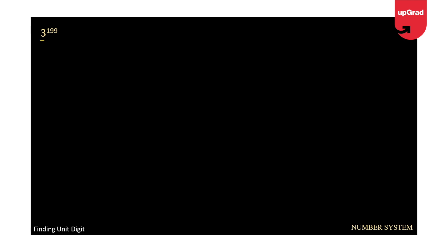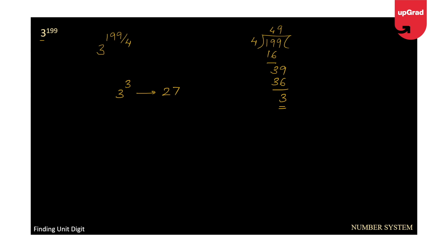Let's take one more example: 3 raised to the power 199. The cyclicity of 3 is 4, so we divide the power by the cyclicity: 199 divided by 4. The remainder is 3, so we compute 3 to the power 3, which is 27. We are looking only for the unit digit, so the answer is 7. That means 3 raised to the power 199 gives 7 as the unit digit.